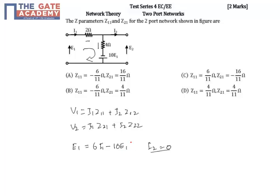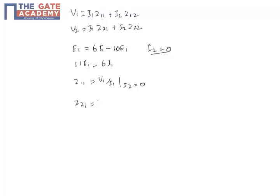Minus 10E1. Now, 11E1 is equal to 6I1. Before that, we should know z11 is equal to V1 by i1 when i2 is equal to 0. Similarly, z21 is equal to V2 by i1 when i2 is equal to 0. So now, z11 from this will be equal to 6 by 11 ohms.